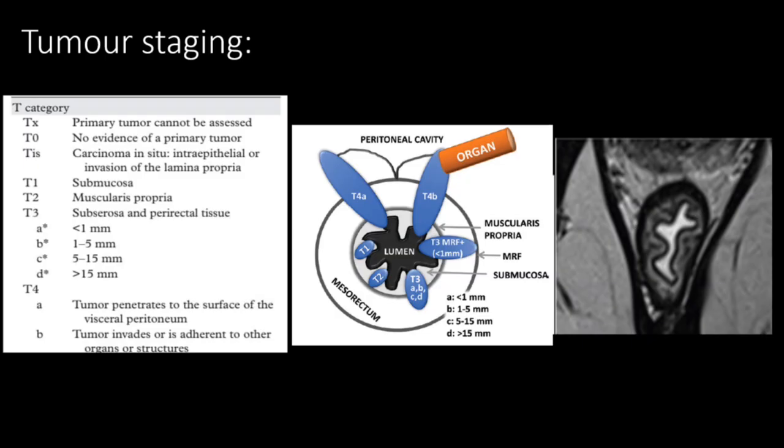Coming to tumor staging: TX — primary tumor cannot be assessed. T0 — no evidence of primary tumor. TIS — carcinoma in situ, intraepithelial or invasion of lamina propria. T1 — tumor invades submucosa. T2 — tumor invades muscularis propria. T3 — subserosa and perirectal tissue is involved.